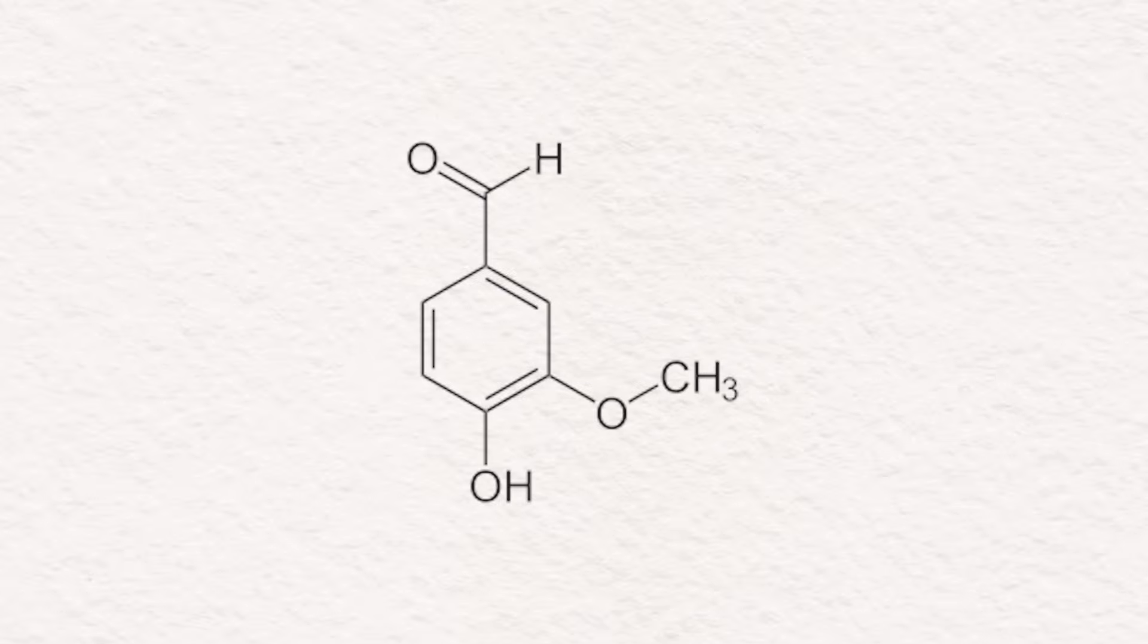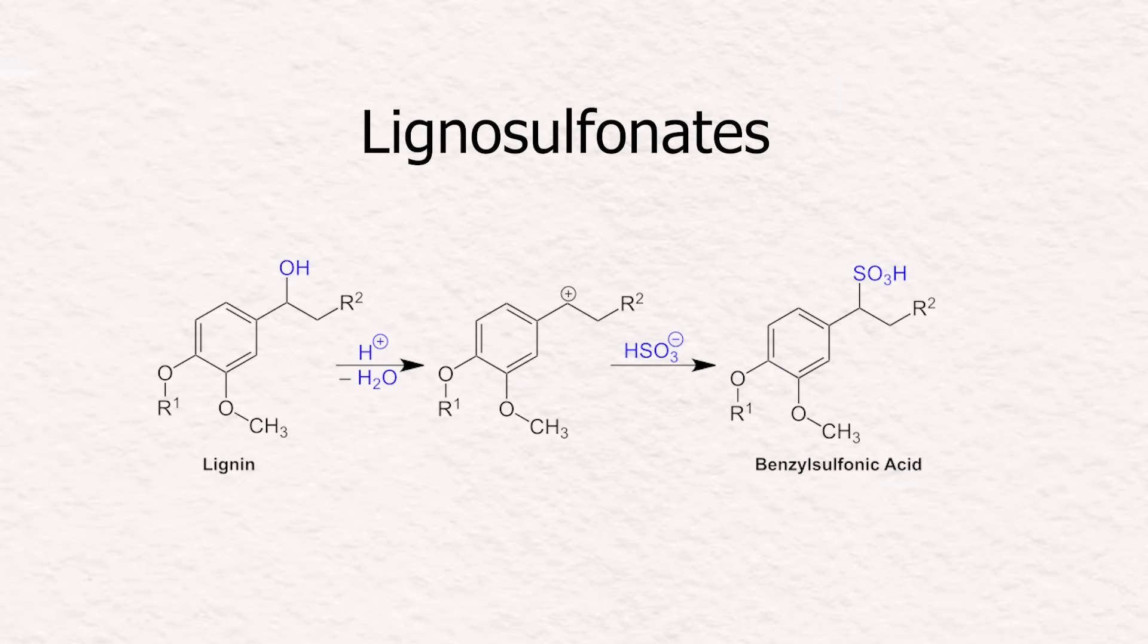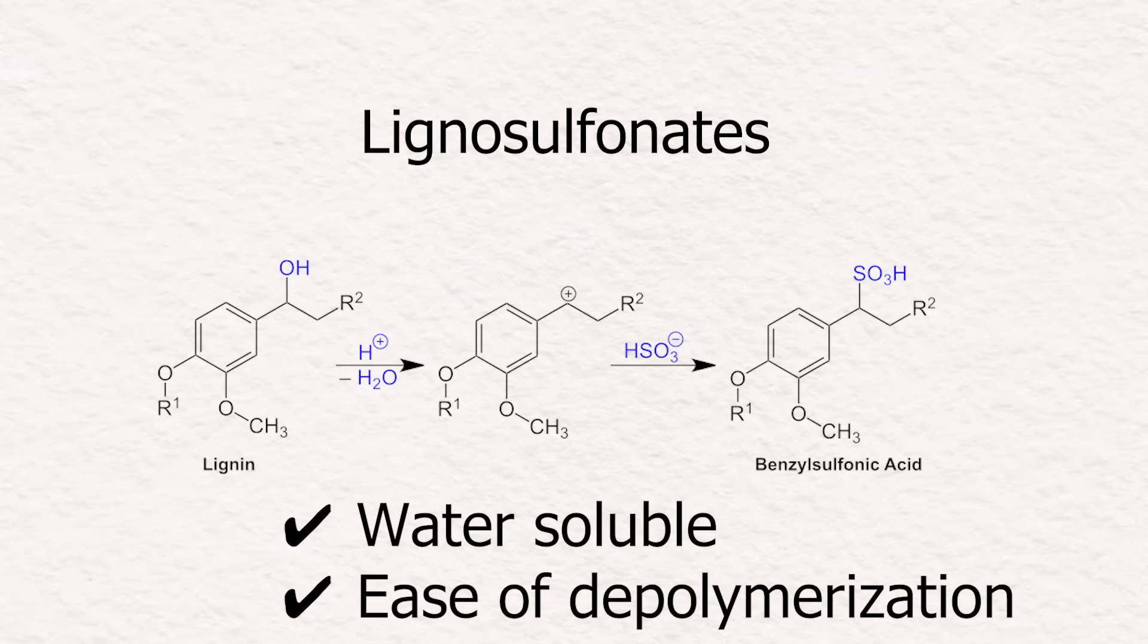So it seems that the largest producer of vanillin from lignin uses a lignin type called lignosulfonates, which come from a process called sulfite pulping. Unlike other types of lignin, lignosulfonates are soluble in water and are easier to make vanillin from.